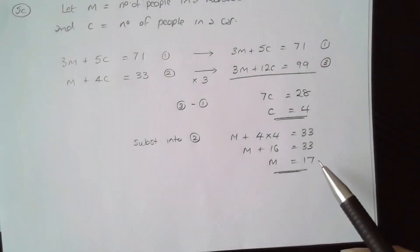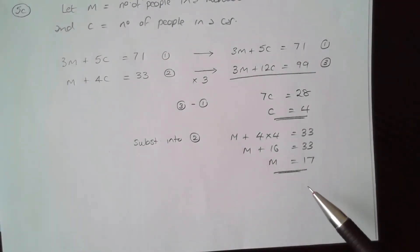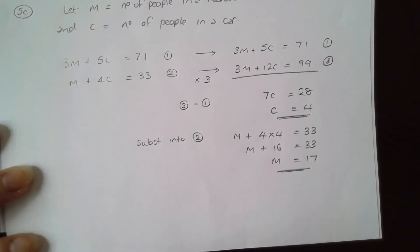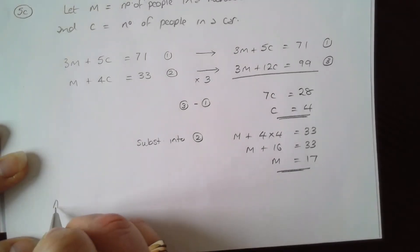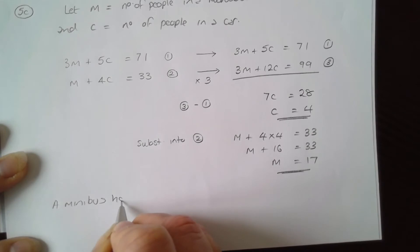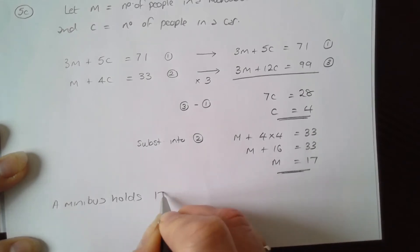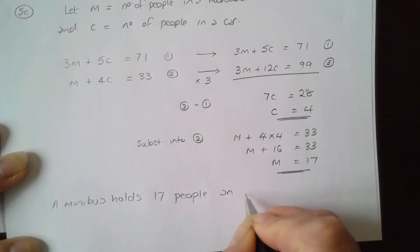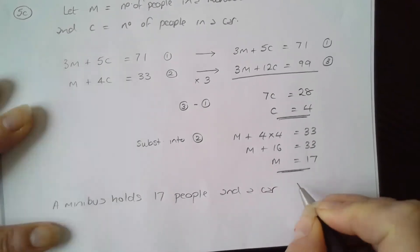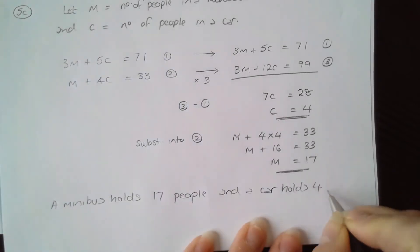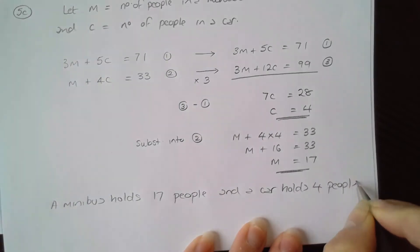I've solved the equations, now I need to write down the answer to the problem. The problem asked how many people does each type of vehicle hold: a minibus holds 17 people and a car holds 4 people. And there's my answer to the problem.